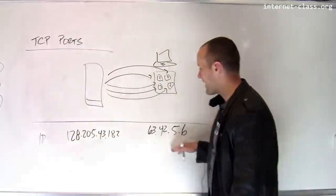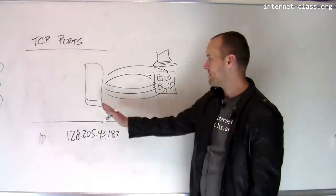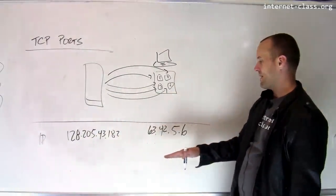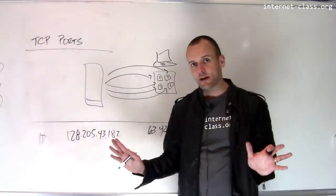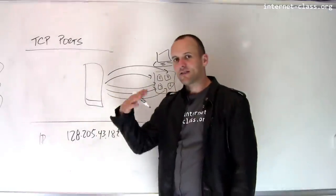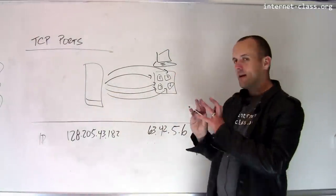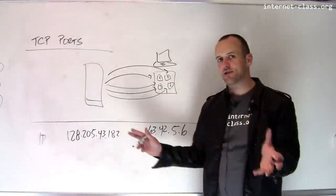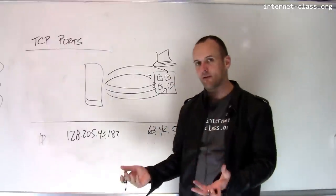And each one of these connections, you'll notice, is between the same two computers at the IP layer. So the IP layer is just delivering packets from 128.205.43.182 to 623.42.5.6. That's it. That's all the IP layer knows about. But these connections are distinct. These connections are each for individual parts of the page, and something has to make sure that the data that's contained in these connections isn't all shuffled around. So I don't want part of one of these photos mixing in with part of another photo.